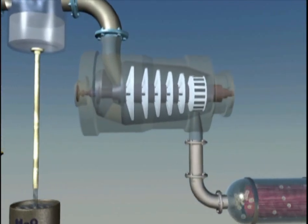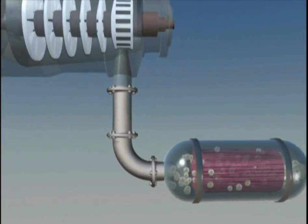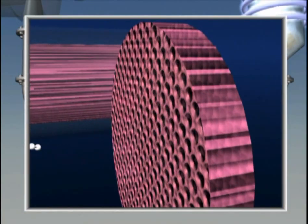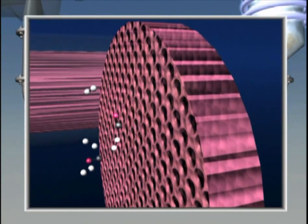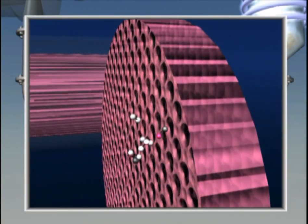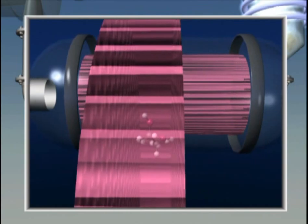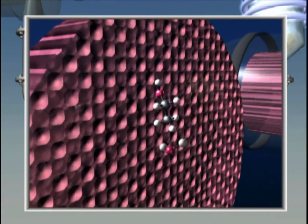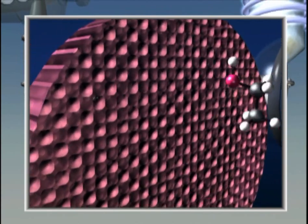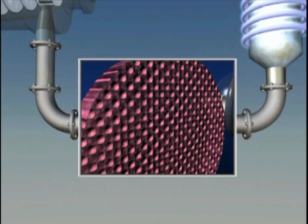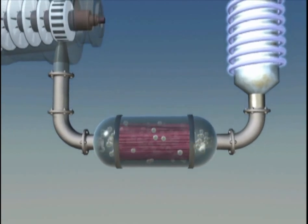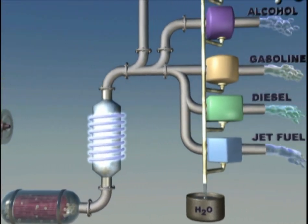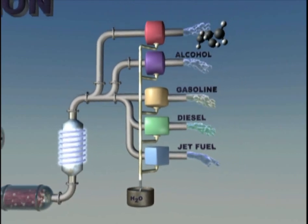The pressurized hot syngas is then passed over a catalyst to form a liquid. The catalyst is contained in a reactor and the syngas is passed through the reactor where the carbon monoxide and hydrogen molecules combine to form larger molecules. These molecules are subsequently cooled, condensed, and refined into clean renewable transportation fuels and other products.